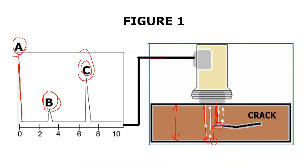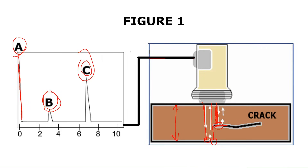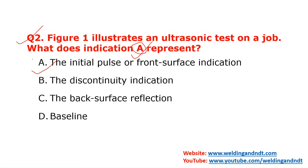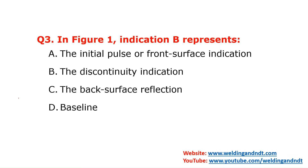Indication A is called the initial pulse or front surface indication. This occurs because the piezoelectric material rings or vibrates when ultrasonic waves are emitted, and the same transducer receives the signal with a time lag. There is also a dead zone near this point where defects cannot be detected. So indication A represents the initial pulse.